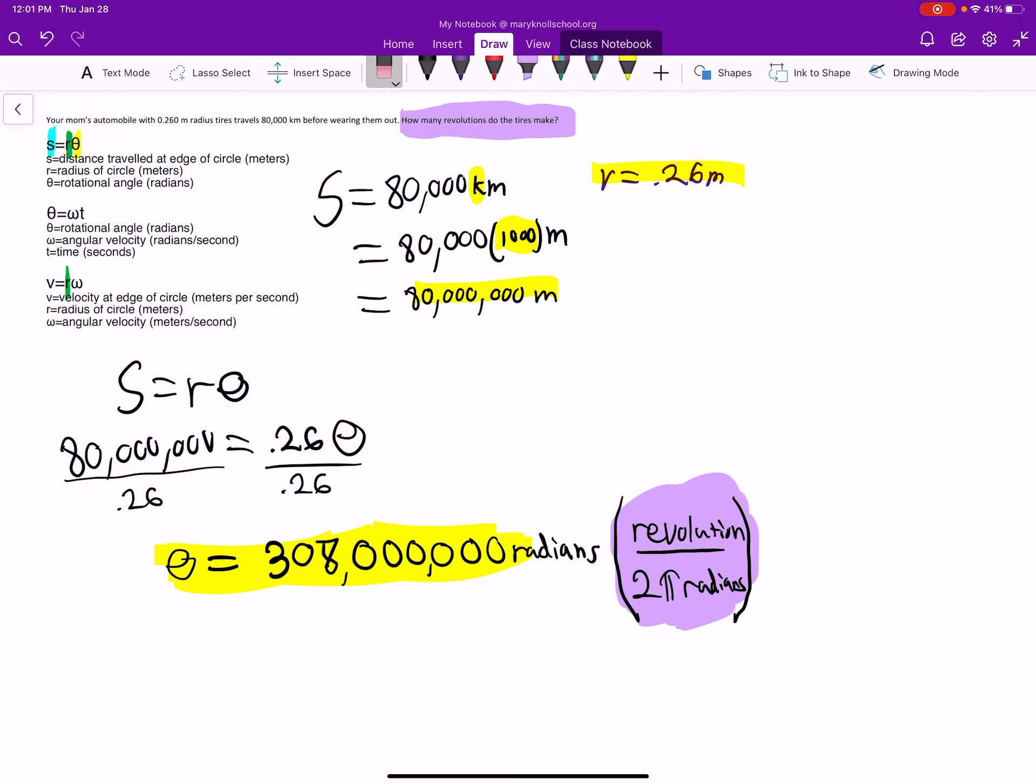So I'm going to take this number, the 308 million, and divide it by 2π. Then I'm going to cancel out the radians with the radians. So now we're in revolutions. Divide by 2π. And then remember that 2π is just two multiplied by 3.14, which is 6.28. So I'm just dividing this number here by 6.28. And the answer is 49.